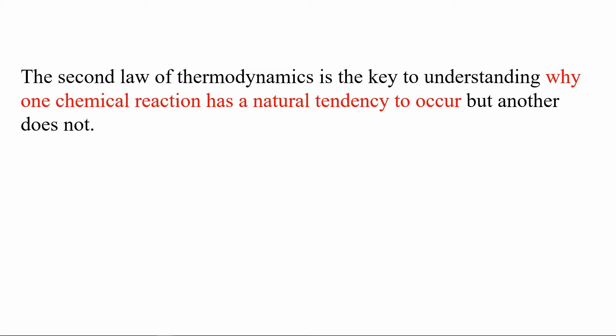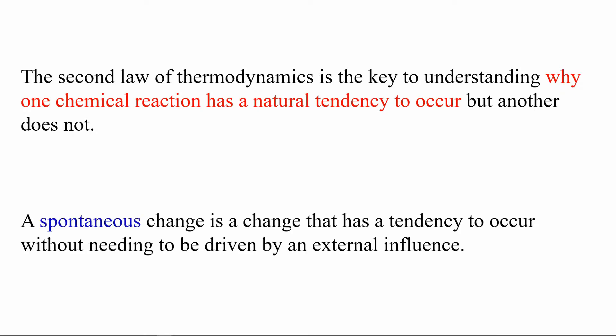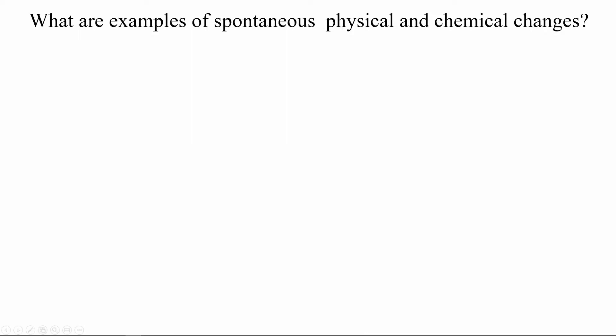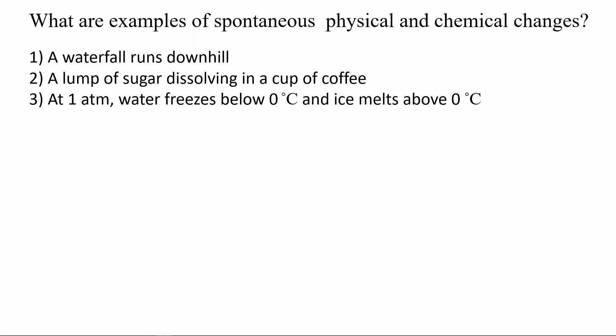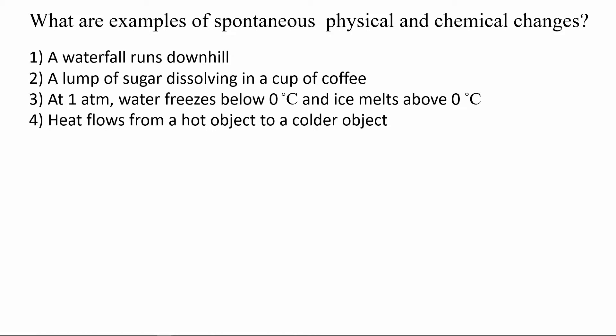The second law of thermodynamics is the key to understanding why one chemical reaction has a tendency to occur but another does not. A spontaneous change is a change that has a tendency to occur without the need to be driven by external influences. Examples include a waterfall running down a hill, a lump of sugar dissolving in coffee, state changes between solid, liquid, and gas, heat flowing from a hot to a cold object, iron rusting over time, and a gas expanding when volume is increased.